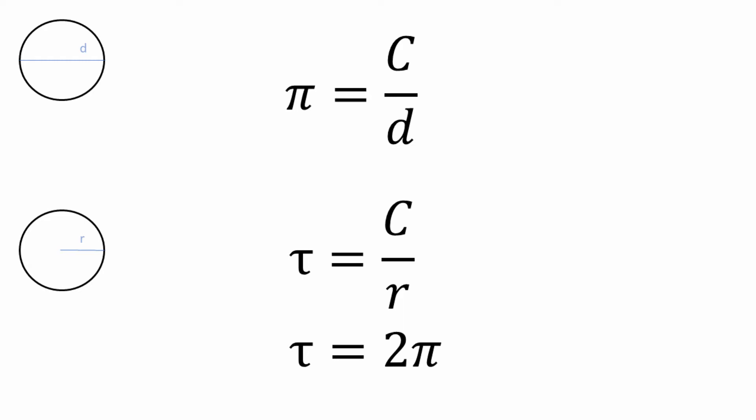In Carl Sagan's book Contact, pi is used in communication with aliens as a marker for intelligence. If we sent pi to aliens, they would wonder why we were sending tau over 2.